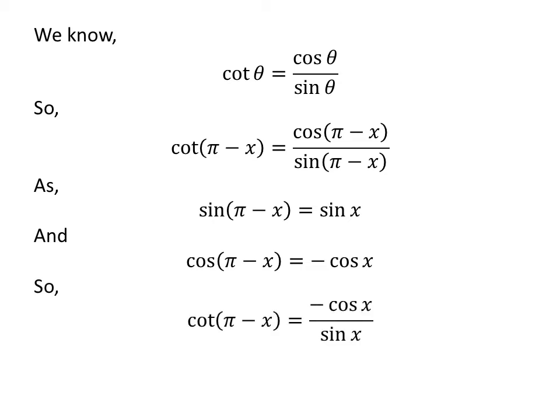Let us apply the above identities in the expression for cotangent of pi minus x. So cotangent of pi minus x equals minus cosine of x upon sine of x.